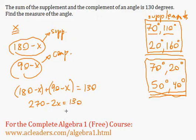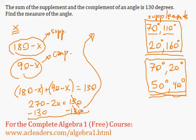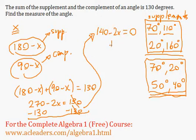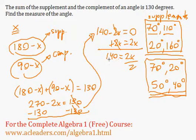180 plus 90 is 270, and negative x minus x is negative 2x, so 270 minus 2x equals 130. Subtract 130 from both sides: 140 minus 2x equals 0, so 140 equals 2x. Dividing both sides by 2, x equals 70 degrees.